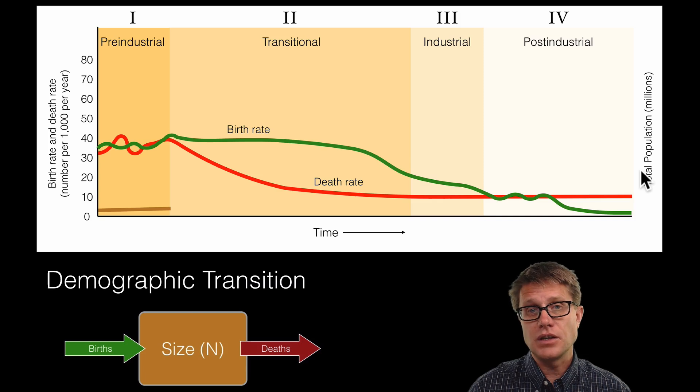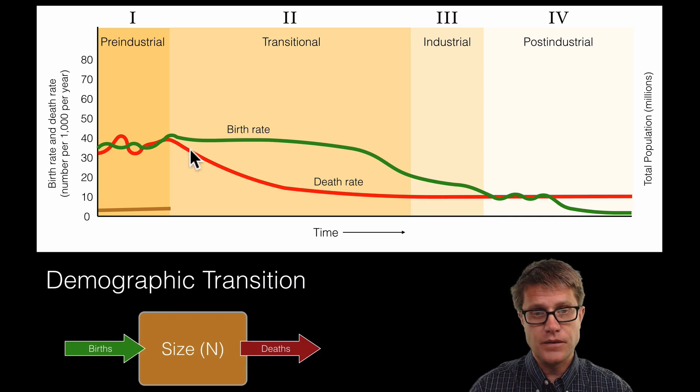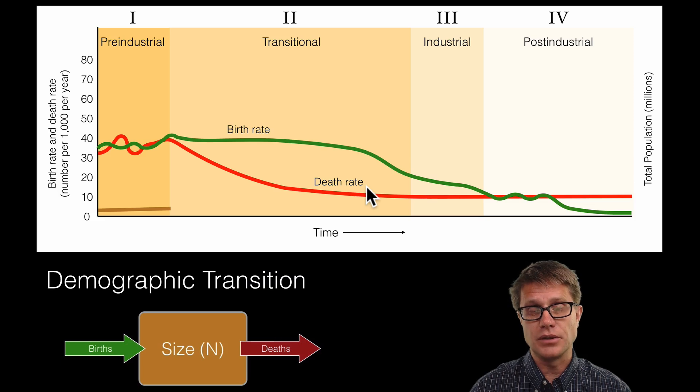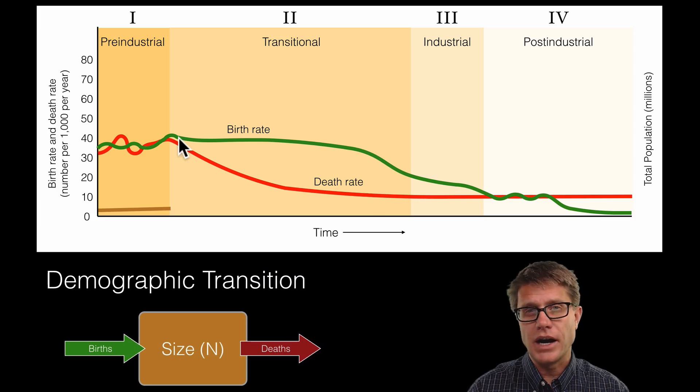As we move into this transitional period, watch what happens. First thing that happens is the death rate will drop off during industrialization. But it takes a while for people to realize that and start having less children. And so it takes a while for the birth rate to drop off.